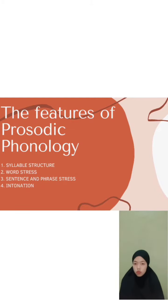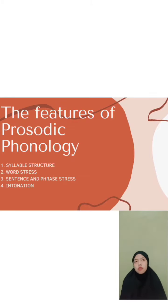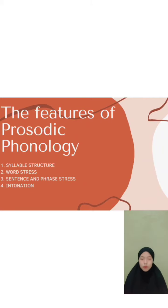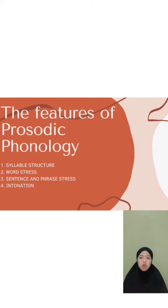We'll start with the syllable. What is a syllable? It is commonly known to be a speech unit that is larger than a segment. Syllables have two types: open syllable, which usually ends in a vowel, and closed syllable, which usually ends in one or more consonants. For example, the English word 'go' is a single open syllable, and 'it', 'ball', 'mold', and 'rest' are all single closed syllables.